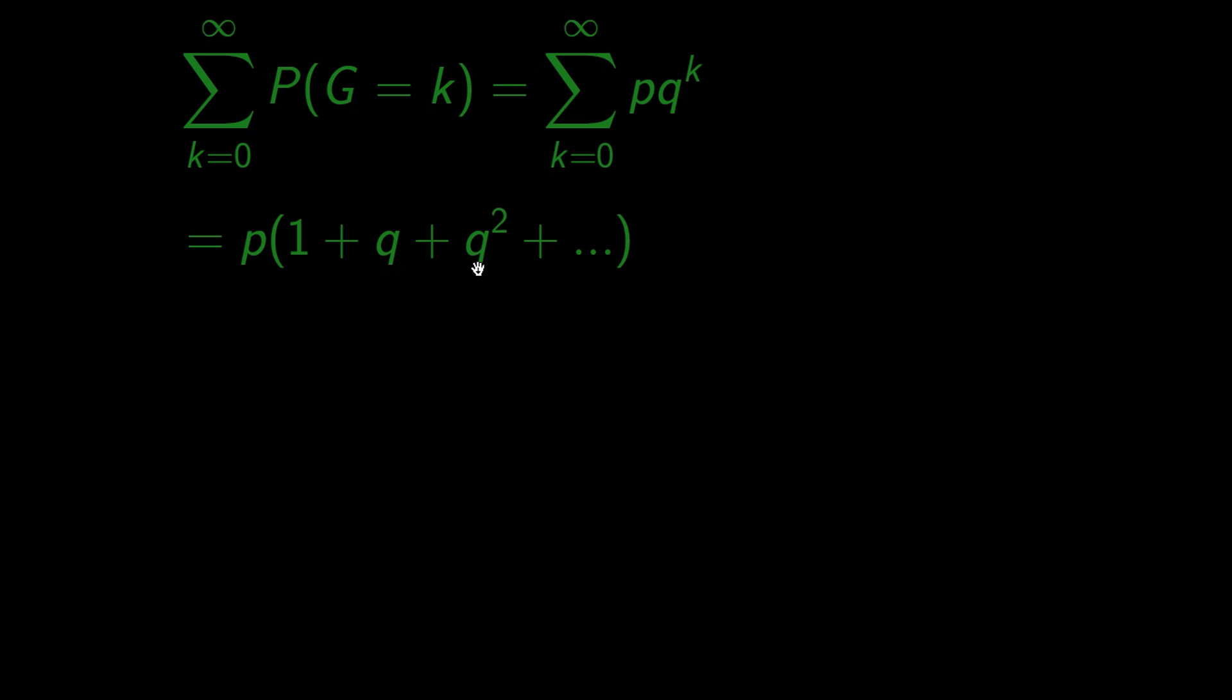We know how much this sum is. At school, they told me and probably you too to use this formula. What they did not tell me is why this formula is true, but it's actually very simple. Let's just multiply both sides by 1 minus q.